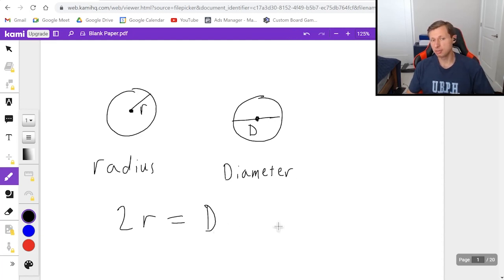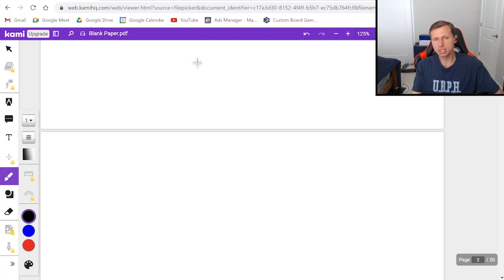So basically all of the equations I'm going to be giving you today, they are going to be in terms of R, the radius, but if you do want to convert your equations to diameter instead, you're going to have to use this relationship right here, and we'll talk about that. So first the area equation. Area is going to equal pi times R squared. And circumference is going to be 2 pi R.